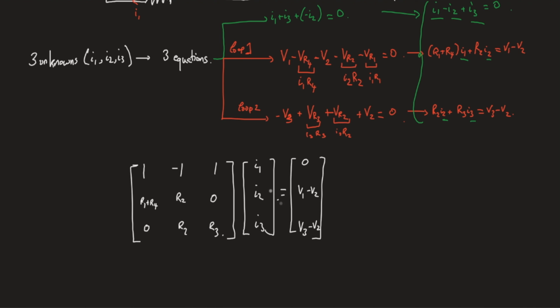Let's give a numerical example to solve for I1, I2, I3. Imagine that we have the following values: V1 is equal to 2 volts, V2 is equal to 3 volts, and V3 is equal to 5 volts. R1 is 1 ohm, R2 is 2 ohms, R3 is 5 ohms, and R4 is 3 ohms.